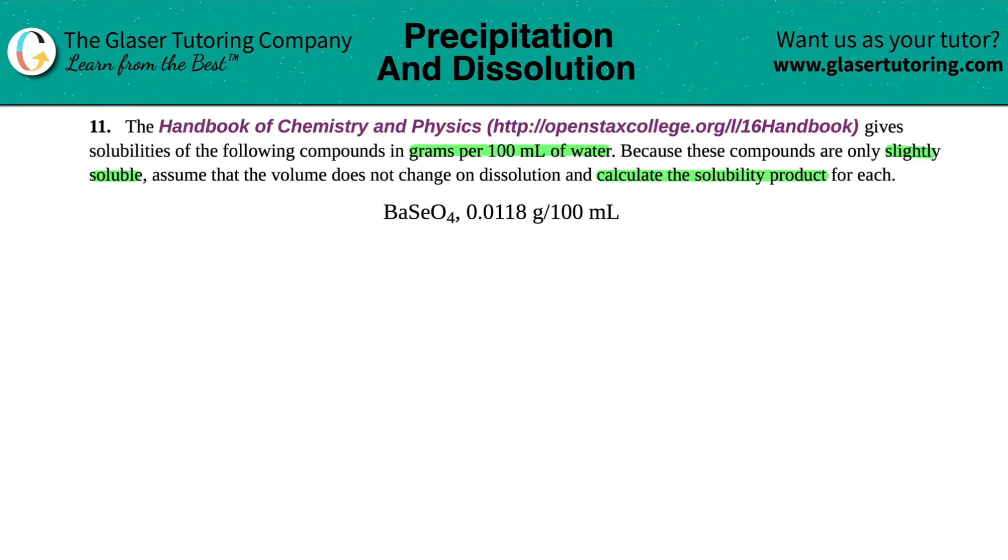And the solubility product, remember, is just a Ksp. So we're looking for a Ksp value for this compound. Now a Ksp always comes from a balanced equation. So the first thing is we have to write the correct balanced equation for this slightly soluble compound.